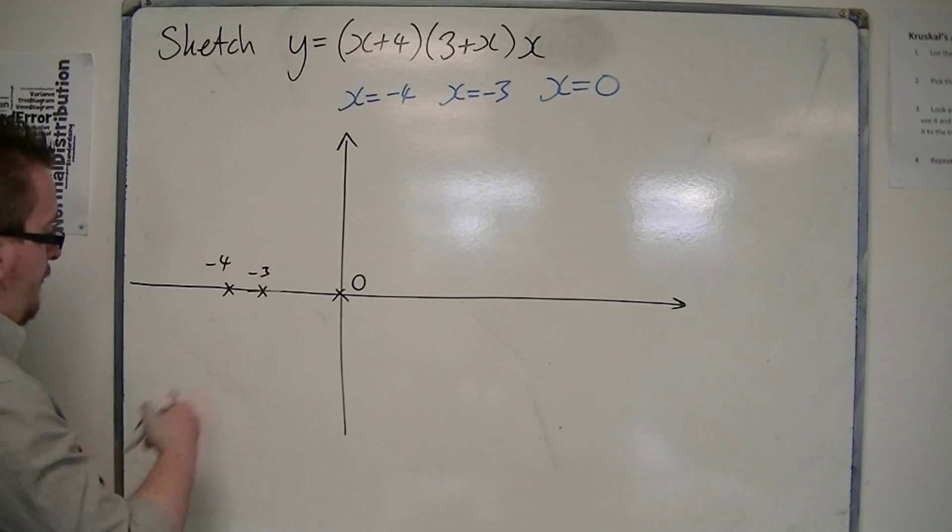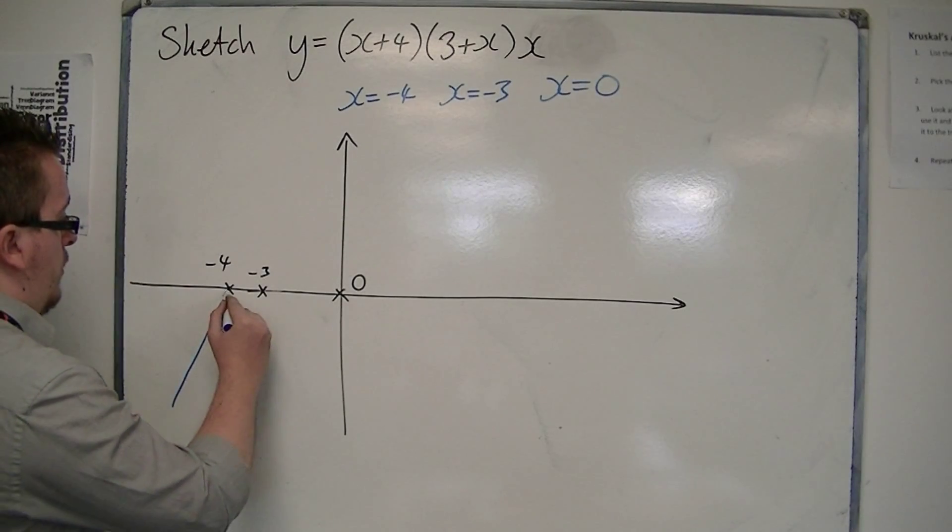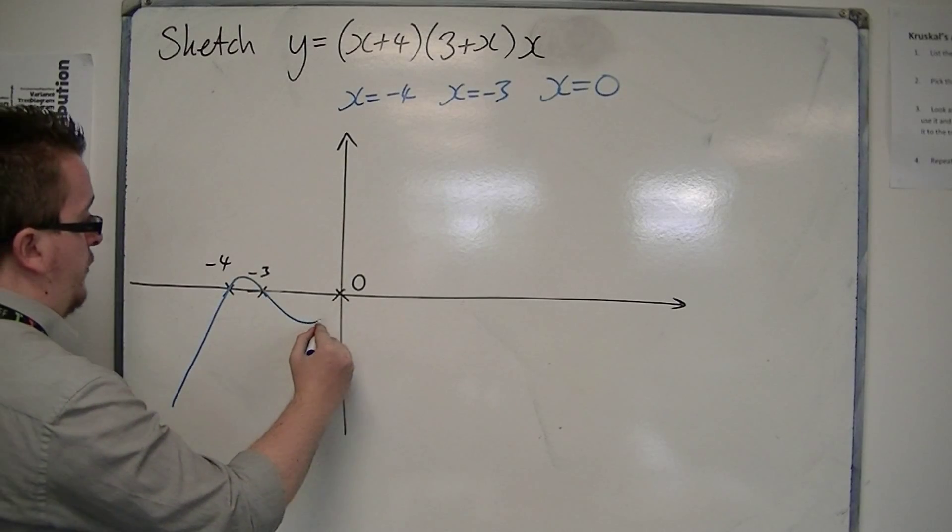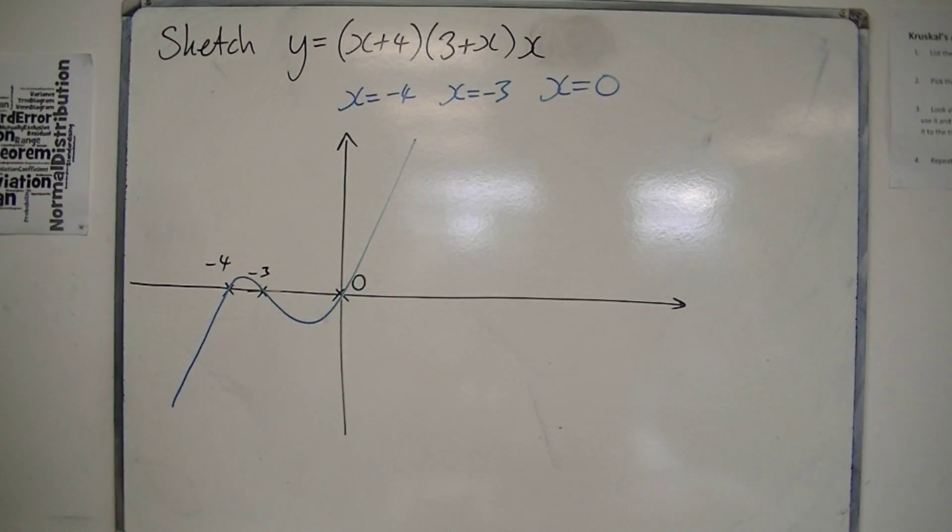I start from the bottom left, go through minus 4, minus 3, and then 0, like so.